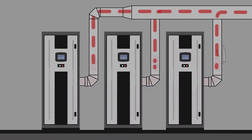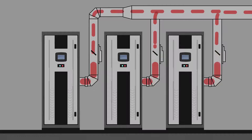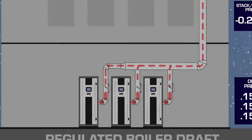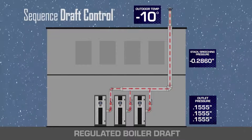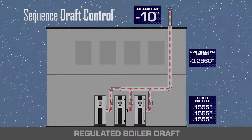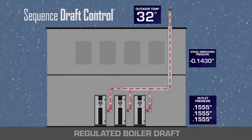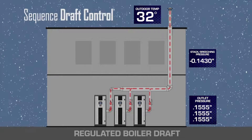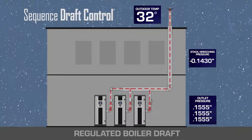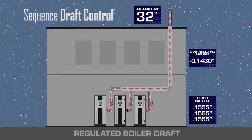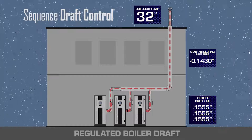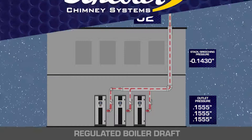If we apply Shebbler sequence draft control dampers to a common vented system, we're able to monitor and control each appliance's outlet pressure independently of the stack pressure reading. This allows us to have Category 4 operation in a common vented system and automatically compensate for various firing rates and ambient temperatures to maintain maximum efficiency at all times.